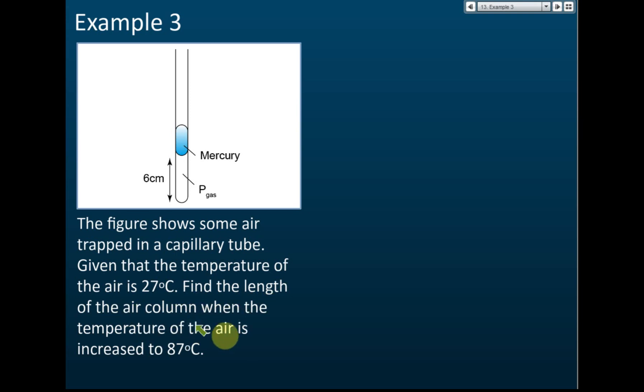We have T1 equal to 27 degrees Celsius, which is equal to 27 plus 273, which equals 300 Kelvin. And then we have T2 equal to 87 degrees Celsius, so 87 plus 273, which is equal to 360 Kelvin.